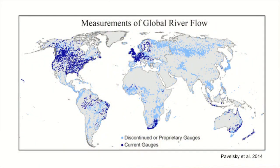From this map we can see that most of the world does not have active gauge information. So in order to fill the gaps of these gauges and develop a globally consistent view of river dynamics, our group is working on ways to monitor rivers from satellite images.